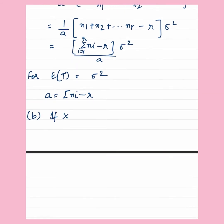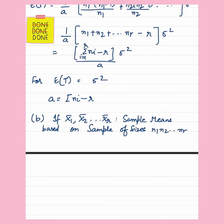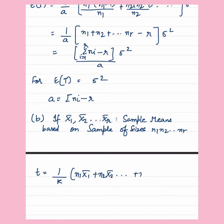Moving on to the next part, we have been given r sample means based on samples of sizes N1, N2, ..., NR. And T equals 1 upon k times the quantity N1·X1-bar plus N2·X2-bar and so on till NR·XR-bar. We need to estimate mu and find the value of k such that T is an unbiased estimator of mu. We find the expected value of T, keeping in mind that the expected value of Xi-bar is equal to mu.